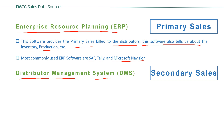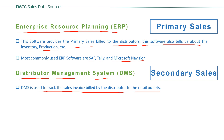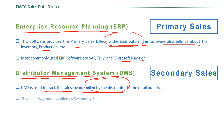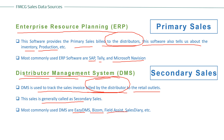DMS — Distributor Management System — is the software that captures secondary sales. It is used to track the sales invoices built by the distributor to the retail outlets. In the general trade channel: from manufacturing unit to distributor is primary sales; from distributor to retailer is secondary sales. This secondary sales is captured by DMS, which must be installed at distributor points. Commonly used DMS platforms include Easy DMS, Bism, Field Assist, and Sales Diary.